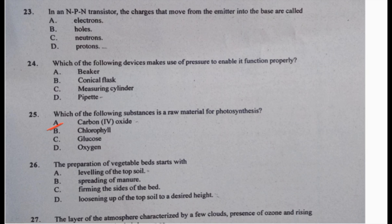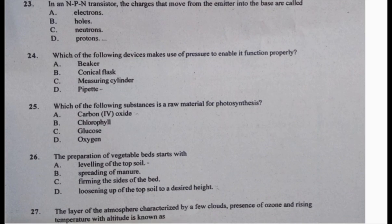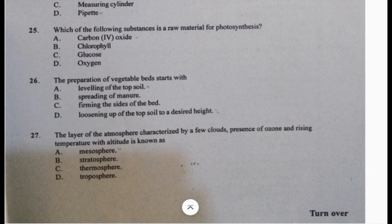26: the creation of vegetable beds starts with A, leveling of the topsoil, B, spreading of manure, C, firming the size of the bed, D, loosening up the topsoil to a desired height. Question 26 is A, leveling the soil. 27: a layer of the atmosphere characterized by few clouds, presence of ozone, and rising temperature with altitude is the stratosphere. We have mesosphere, stratosphere, thermosphere, troposphere. The answer is B, stratosphere.